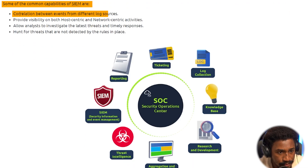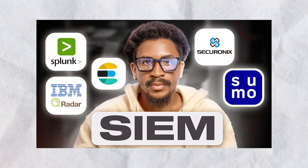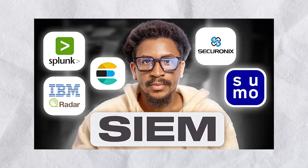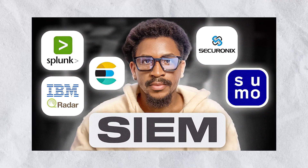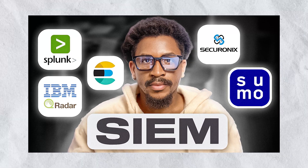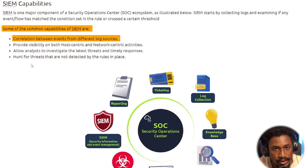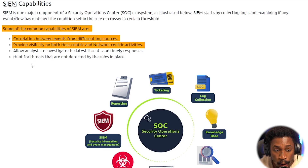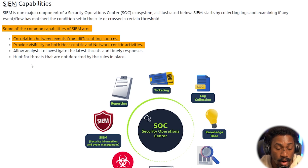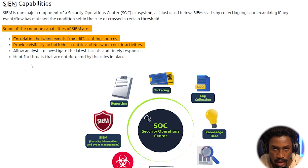Some common capabilities of SIEM include correlation between events from different log sources. If you haven't watched the first part of this video, I definitely recommend checking it out — it covers the foundational stuff about network visibility, what a SIEM is, and some log source basics. The SIEM provides visibility on both host-centric and network-centric activities.